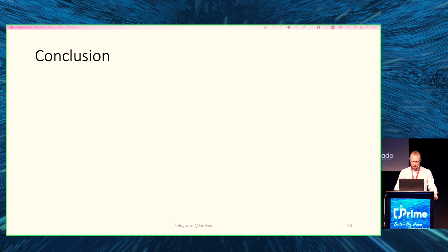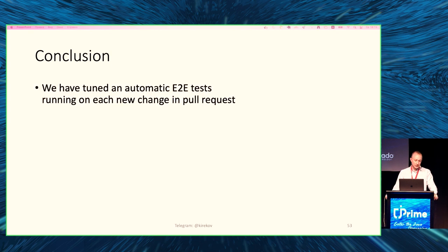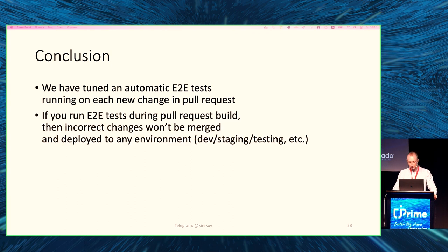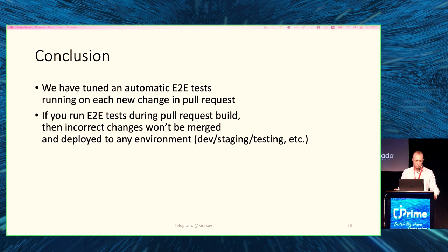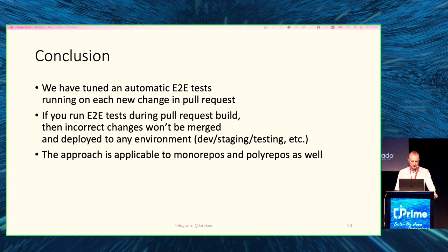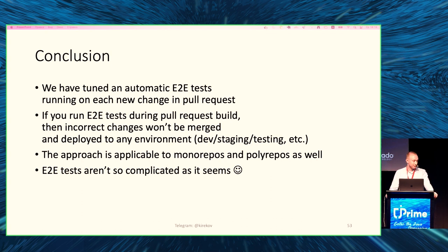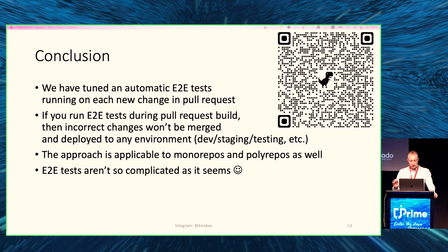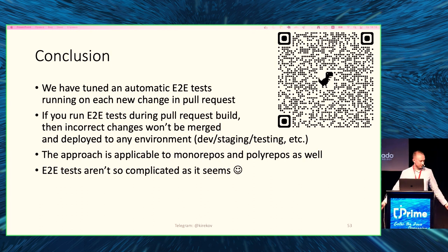Conclusion: we tuned automatic E2E test running on each new pull request change. If E2E tests run during the pull request build, incorrect changes won't be merged and deployed to any environment — dev, staging, testing, whatever. The approach is applicable to monorepos and polyrepos. And E2E tests are not as complicated as they may seem. Here is the QR code with links to the slides. Thank you very much, and if you have any questions I'm ready to answer them.